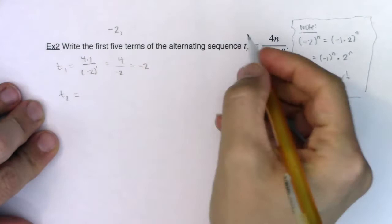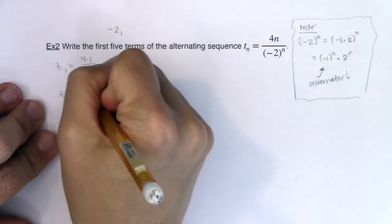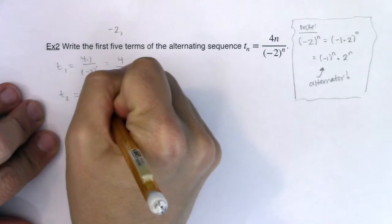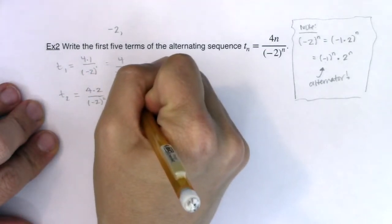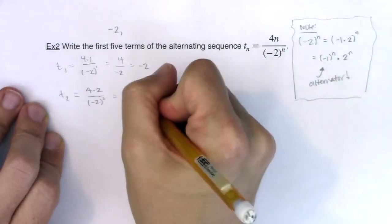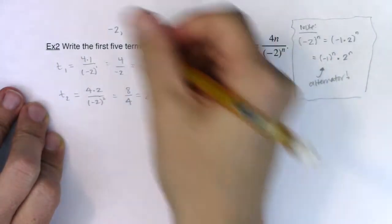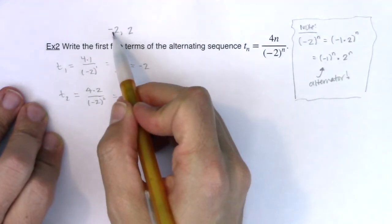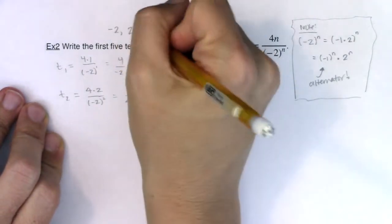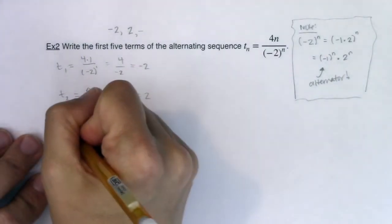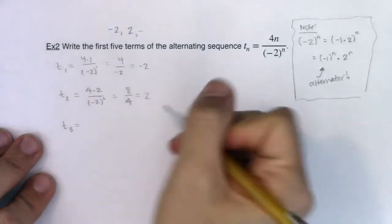Let's figure out what the rest are. So t sub 2, I'm going to plug in 2 for n. So this is going to be 4 times 2 over negative 2 squared. So I'm looking at, I believe, 8 over positive 4. Be careful, we do have an alternating sequence, so I do need the signs to alternate. And this is good. So far I have a negative, then a positive. So my guess is I should have a negative number coming out of t sub 3.